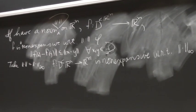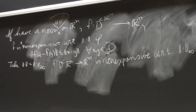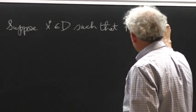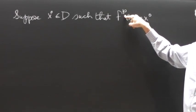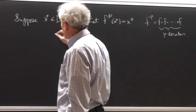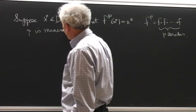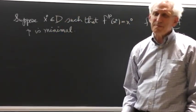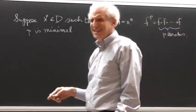I'm interested in the following question. Suppose we have a periodic point of such a map. So by that I mean suppose we have some x naught in D such that f to the p of x naught equals x naught, where by this I mean p iterates of f. So f to the p is just f composed with f, p iterates. And suppose that p is minimal. A minimal p which does this assuming there is some p. And then x naught is called the periodic point of f of period p if this happens.